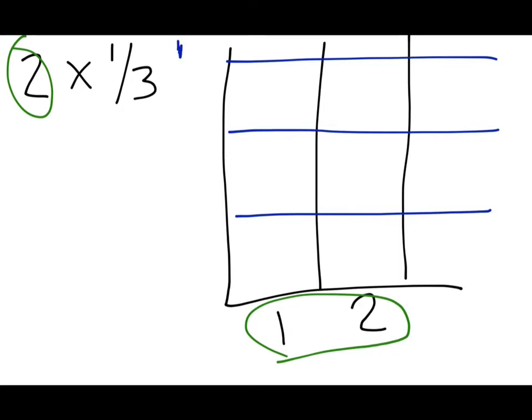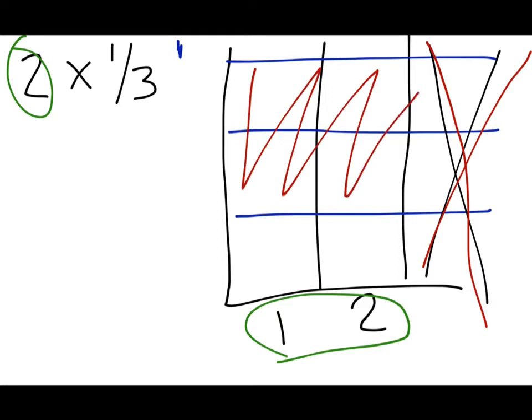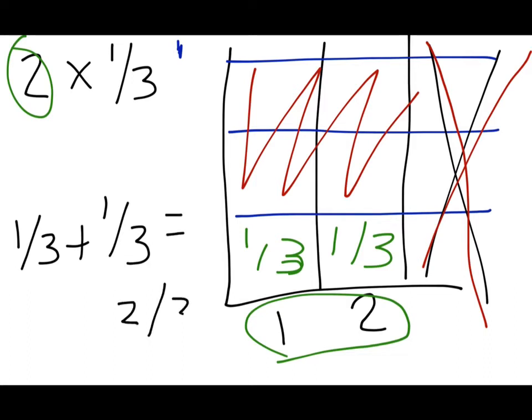And I need 2, so this whole section here is not necessary. Actually let's make that red. And I only need to keep 1 third of each whole, so I can cross out the other sections. When I look at it, I now have 1 third and 1 third. I can take that then and do 1 third plus 1 third, and that equals 2 thirds. And that's my solution.